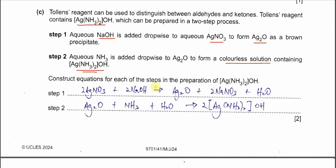Construct the equation for these two steps — most candidates could not answer this. For step one: silver nitrate reacts with sodium hydroxide to form the brown precipitate silver oxide, with sodium nitrate and water as byproducts. For step two: the brown precipitate Ag₂O reacts with ammonia. Since the question states a colorless solution containing [Ag(NH₃)₂]⁺ is formed, you put that compound on the right-hand side and balance using water.